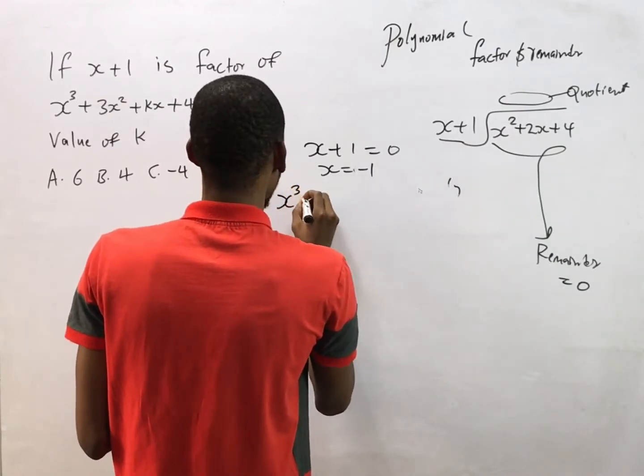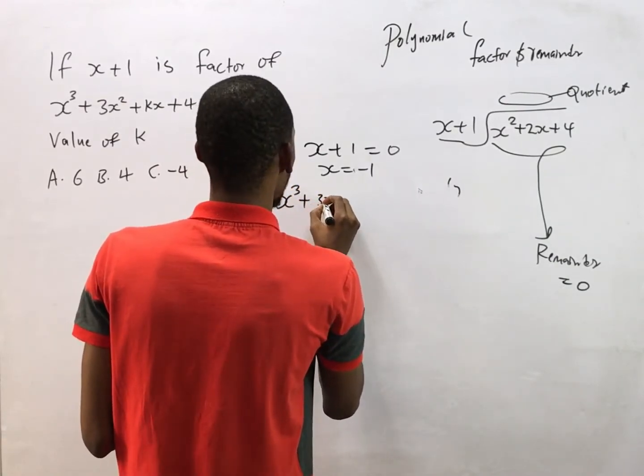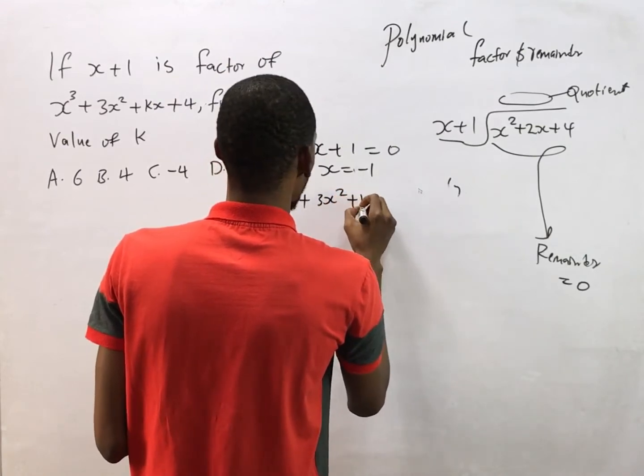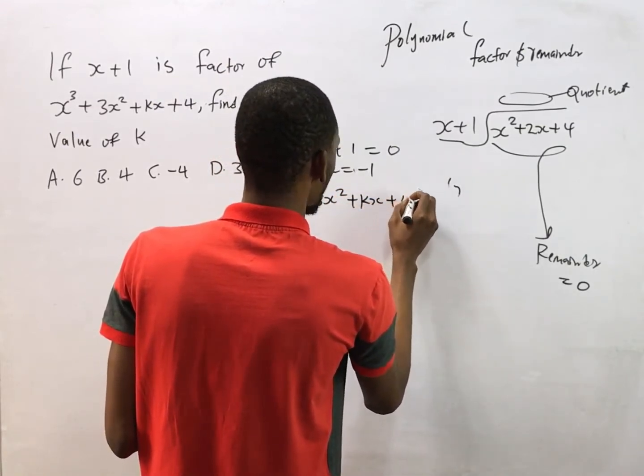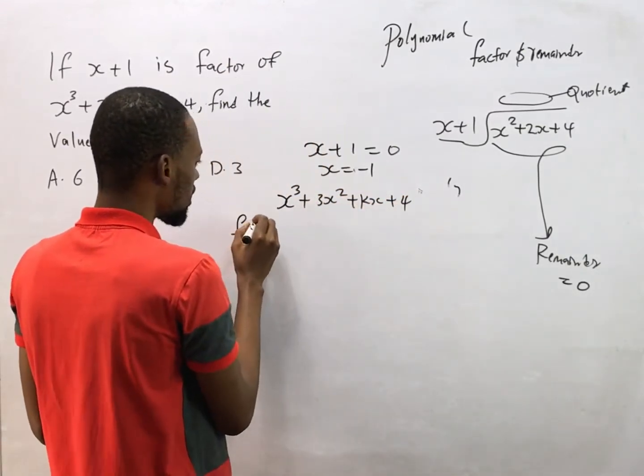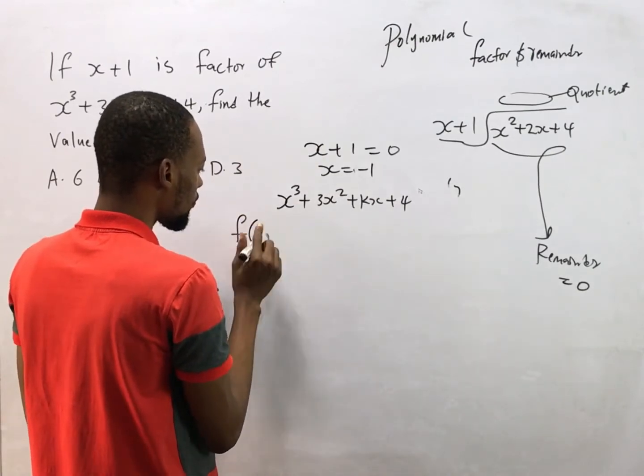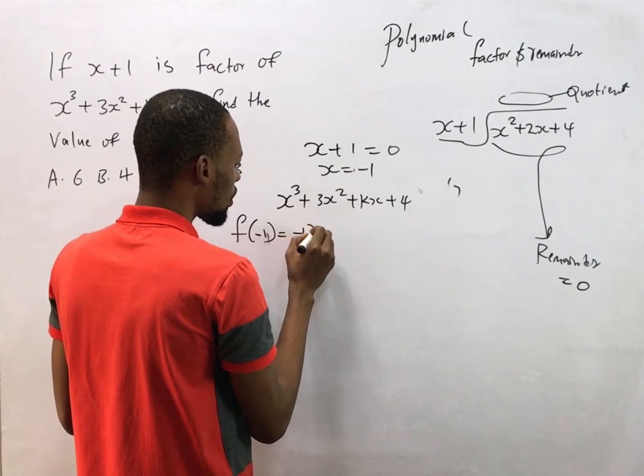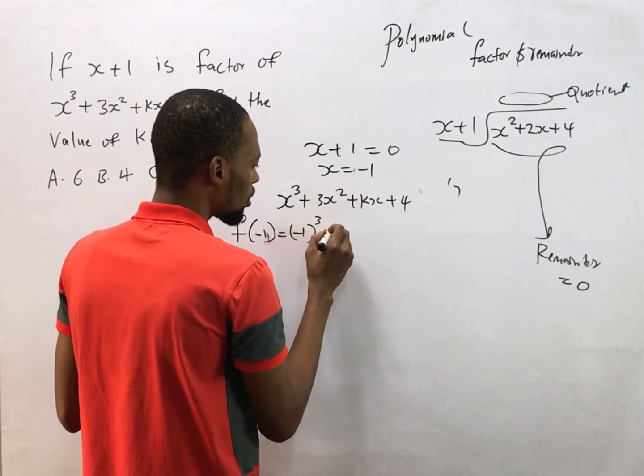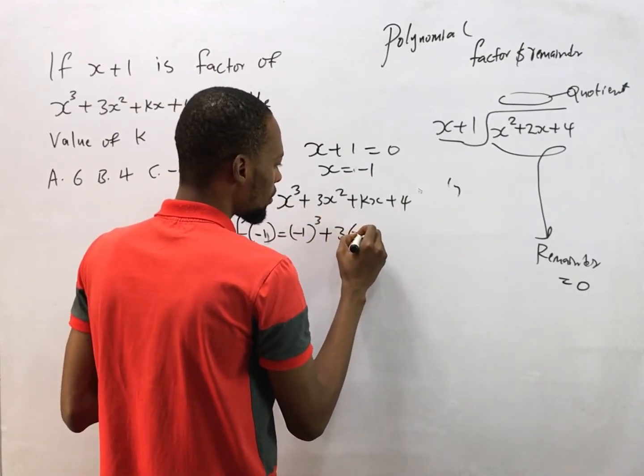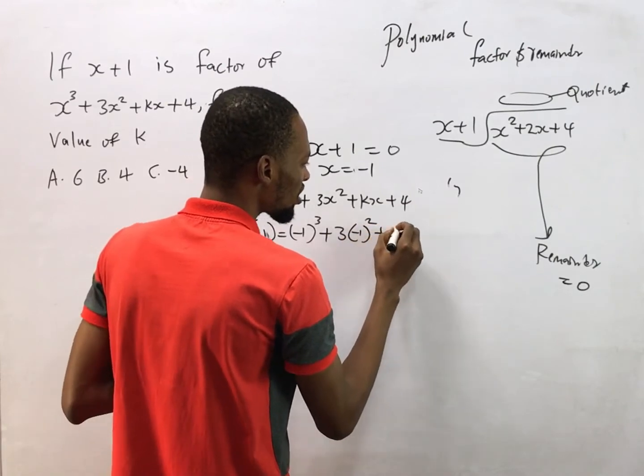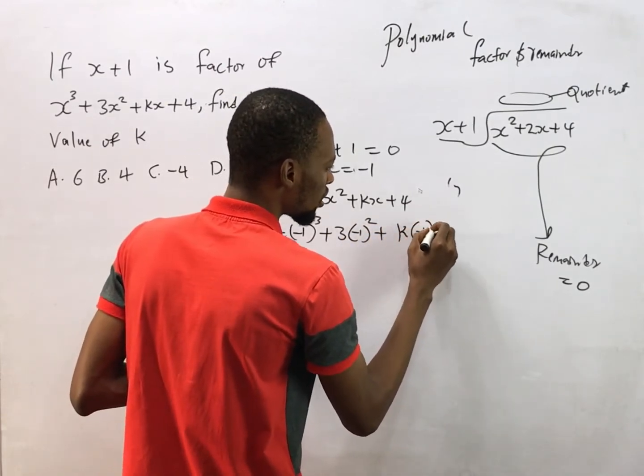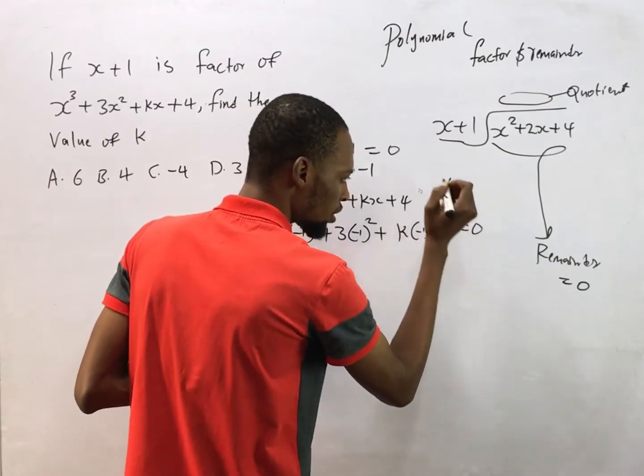x raised to power 3 plus 3x squared plus kx plus 4, if f equals minus 1, then we have minus 1 raised to power 3 plus 3 times minus 1 squared plus k times minus 1 plus 4 equals zero.